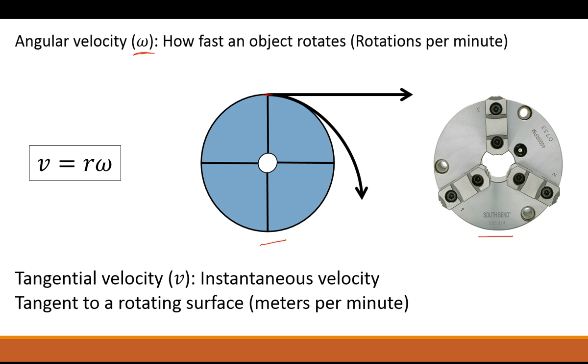And these are both tied together by this equation here. This v is your tangential velocity or your instantaneous velocity and this omega is your angular velocity. Now your angular velocity and your tangential velocity or instantaneous velocity are proportional based on your radius. So the radius times your rotational velocity gives you your instantaneous velocity. So that's the relationship between the two.